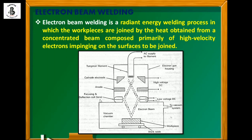After the cathode and anode, these high-energy electrons are focused by a lens — the focusing and deflection coils on both sides — which are connected to a low-voltage DC power supply. The emitted electrons from the tungsten filament, accelerated by cathode and anode, are focused with the help of focusing coils toward the workpiece material, which is placed inside a vacuum chamber. These highly excited electrons are concentrated onto the surface of the workpiece.